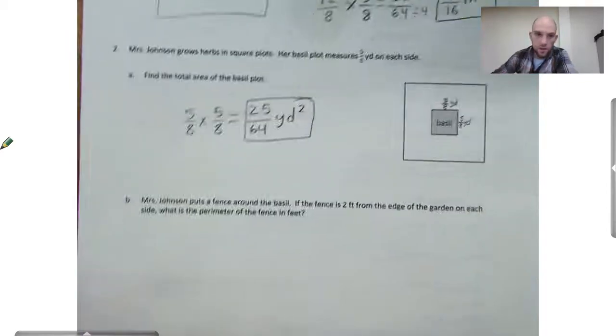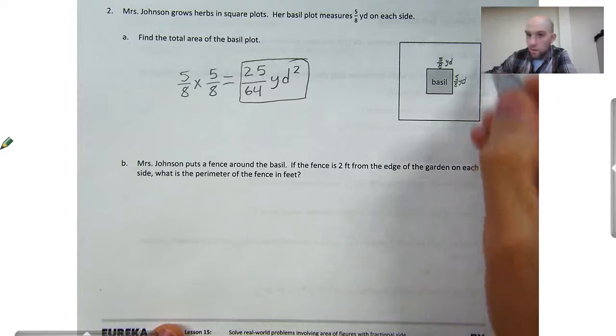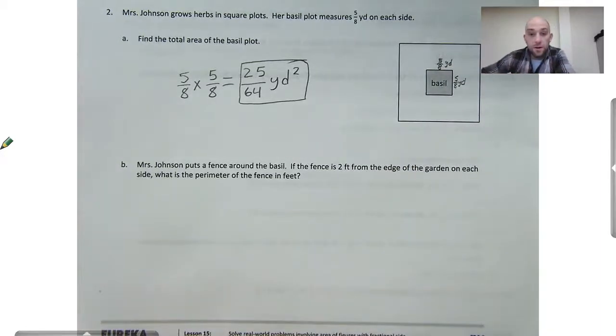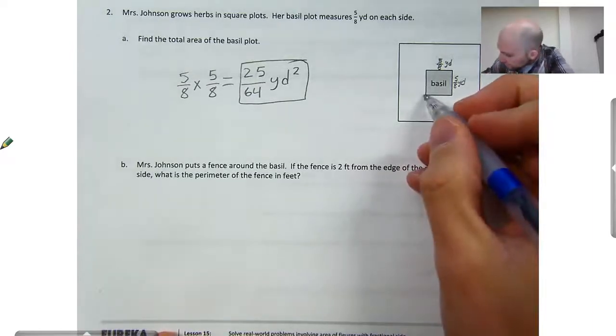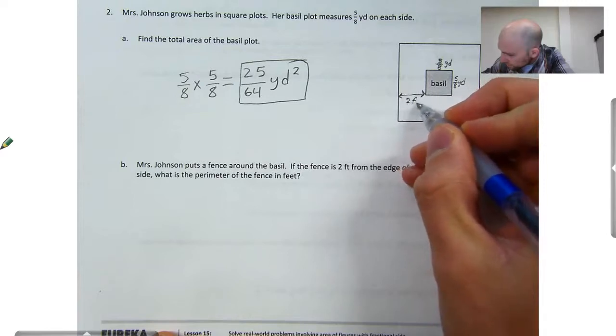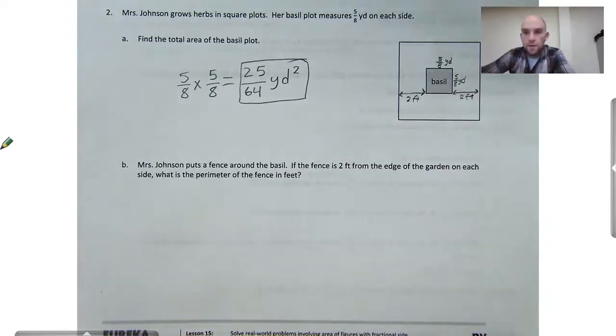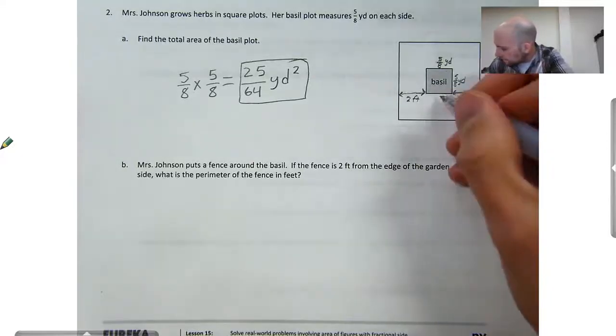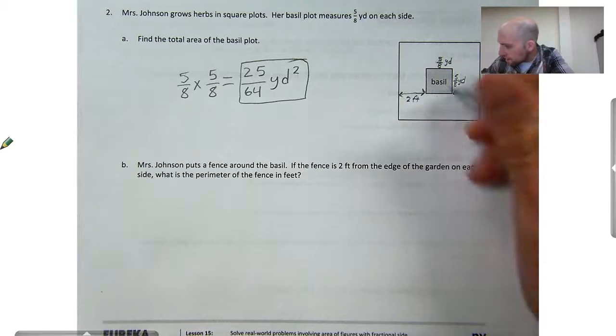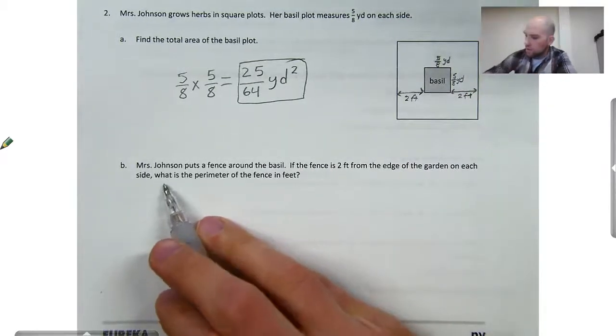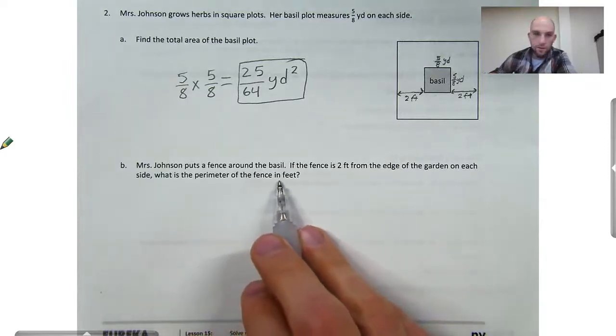But this is going to be a multi-step problem here. It says Mrs. Johnson puts a fence around the basil. So that's this big square around the little square. The fence is two feet from the edge of the garden on each side. What is the perimeter of the fence in feet? So from here to here is two feet. And from here to here is two feet. Actually, let's change yards into feet because we have what is the perimeter of the fence in feet.